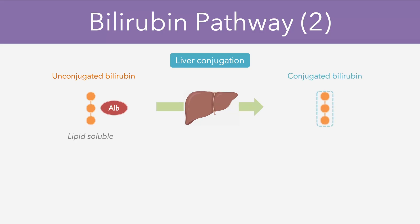This conjugated bilirubin is water soluble, meaning that it can dissolve inside the blood without the need for a carrier protein. What's actually happening is that we're adding a molecule of glucuronic acid to the unconjugated bilirubin molecules, and this reaction is catalyzed by an enzyme known as UGT.